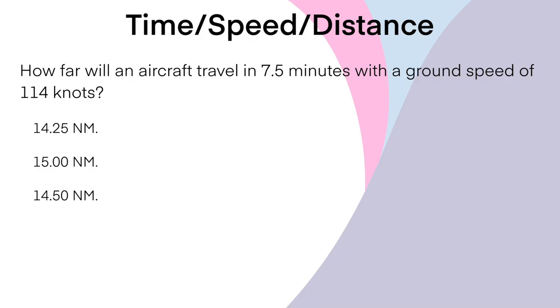Next I'll use the CX-3 for time, speed, and distance. These questions usually require the back of the E6B — ground speed, wind correction angle, true course, all together. With the CX-3 you still go through several steps, but you have to think carefully about what you're solving for. First question: how far will an aircraft travel in 7.5 minutes with a ground speed of 114 knots?